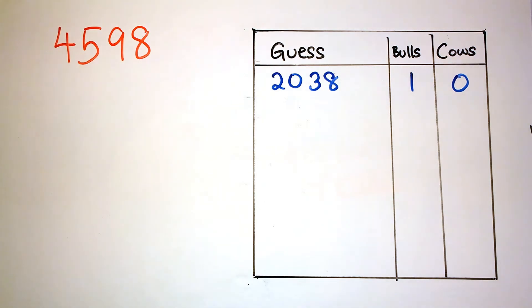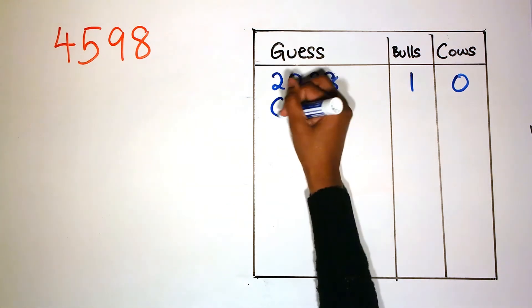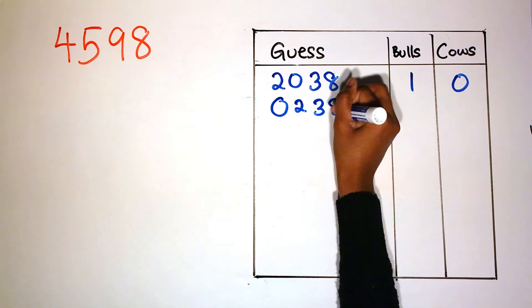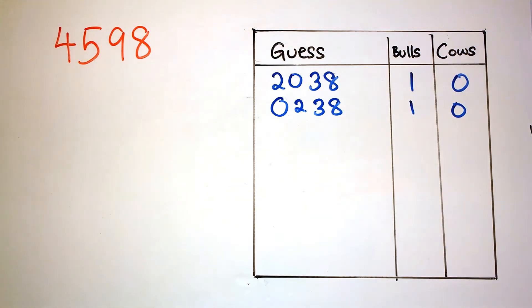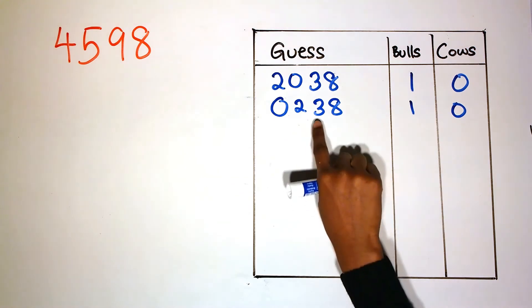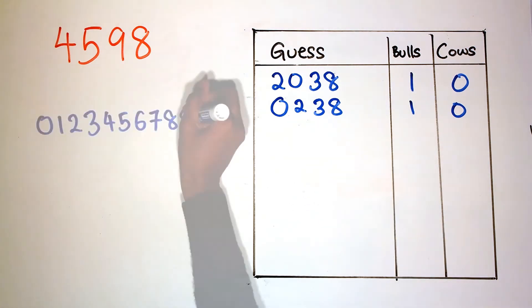I could try to find out this number by rearranging 2038, for example, 0238. Here I have one bull again, which means my correct number at the correct position is either 3 or 8. I could then cross out 2 and 0 as possible numbers.